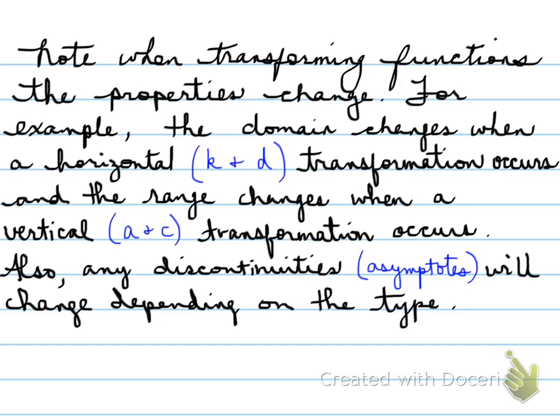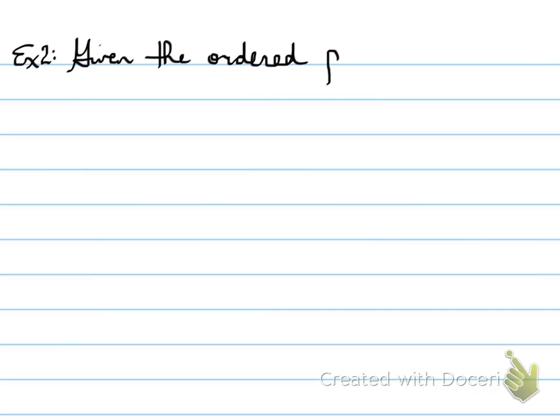Any discontinuity, such as asymptotes, will also change depending on the type of transformation that occurs. So, very important to note. Now, example number two.